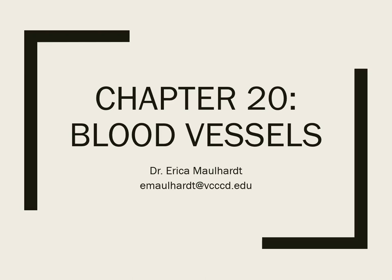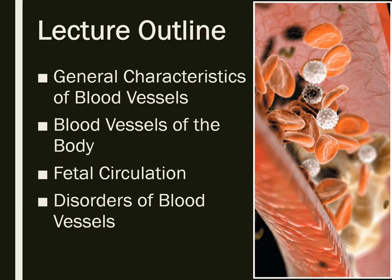Continuing from blood, we're going to talk about blood vessels today. We'll cover the general characteristics of blood vessels, including the layers of their walls, and the different types of blood vessels in the body. We've talked a bit about arteries and veins in lab, but there are other blood vessels as well. We'll also spend time on fetal circulation, which is quite unique, especially regarding the heart and lungs, and then discuss some disorders.